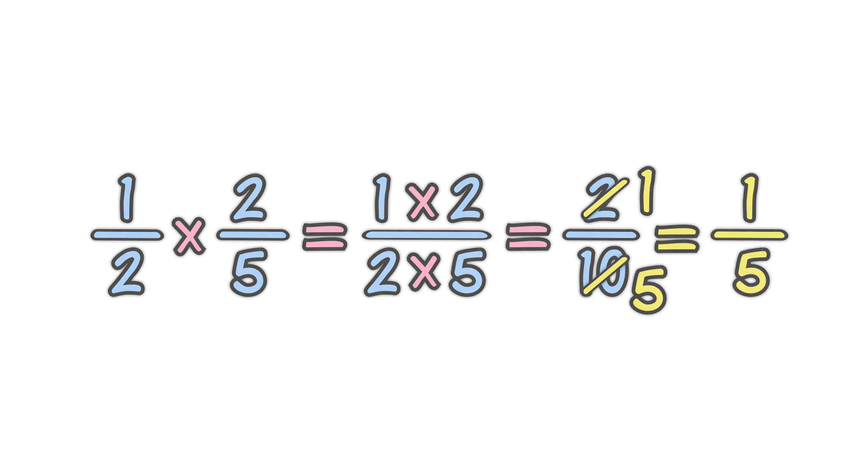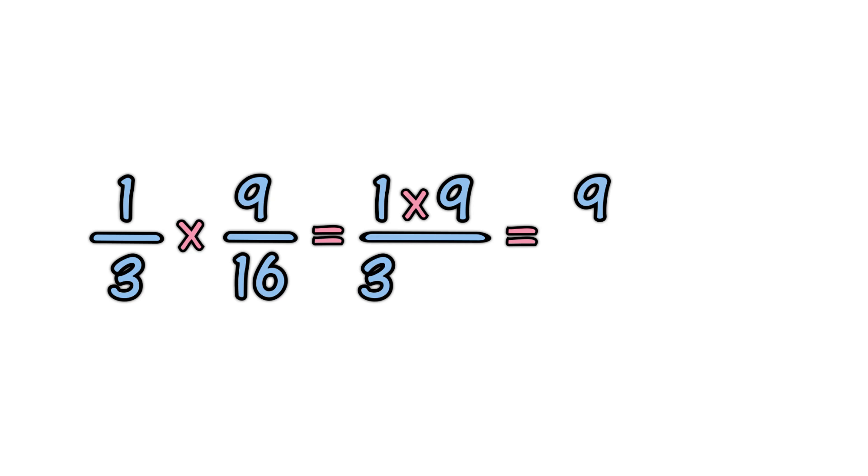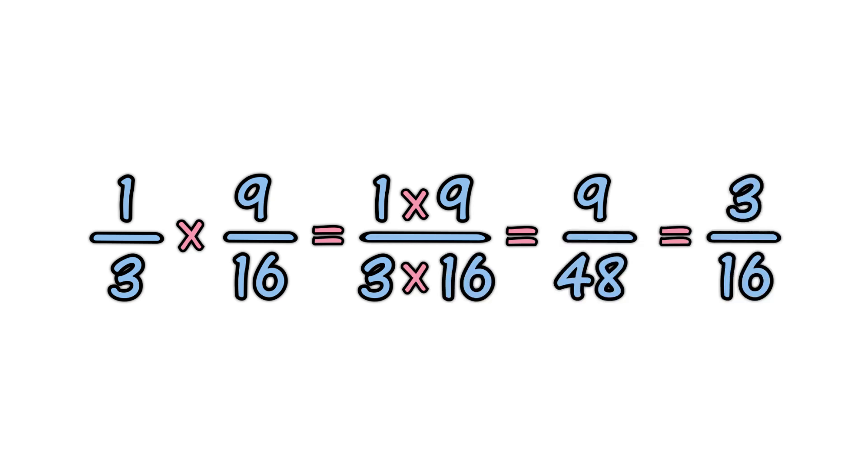Let's try another example. 1 third times 9 sixteenths. Multiply the top numbers. Multiply the bottom numbers. Simplify the fraction. This time we simplified by dividing both top and bottom by 3.